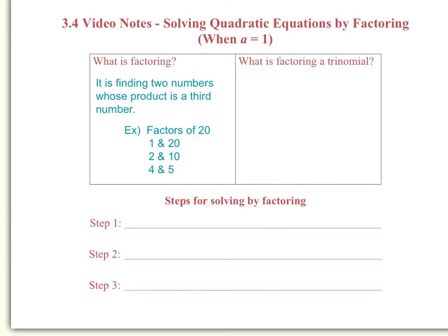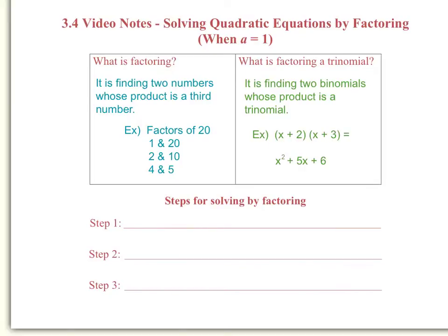Now that is basic factoring. Now let's look at what is factoring a trinomial. It is finding two binomials whose product is a trinomial. Here we have two binomials whose product, that is when we multiply them together, equal this trinomial. We refer to these two binomials as the factored form of this trinomial. In today's lesson, we are going to take a quadratic equation, write it in factored form, and use that factored form to find our solutions.